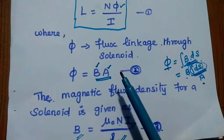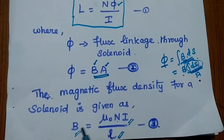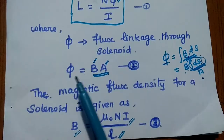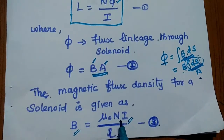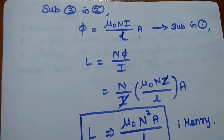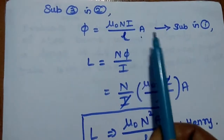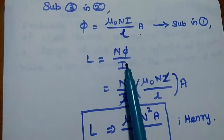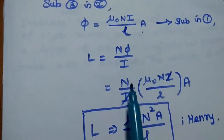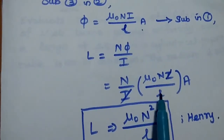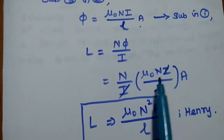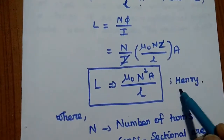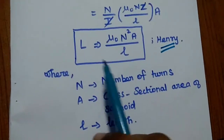Now we are going to substitute the third equation into the second equation. We have flux density B equal to mu naught NI by L. Substituting this in the second equation to get phi: phi is equal to B into A, so B can be replaced by mu naught NI by L. After substituting, phi is equal to mu naught NI by L into A. Now substituting this phi value in the first equation L equals N phi by I, we get L equals N by I times mu naught NI by L into A. The I's cancel, giving L equals mu naught N squared A divided by L. The unit of inductance is Henry. This is the inductance of a solenoid.